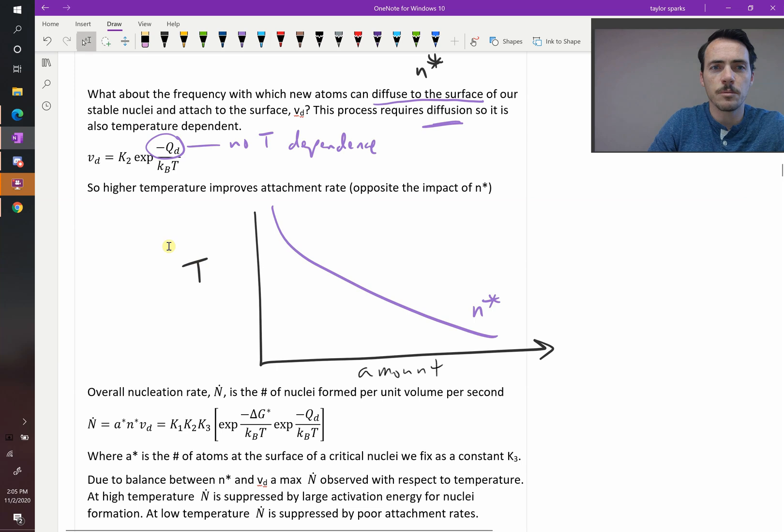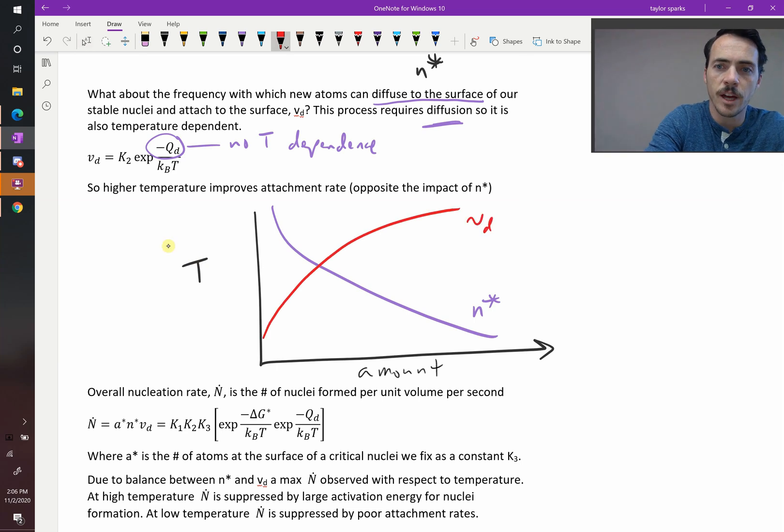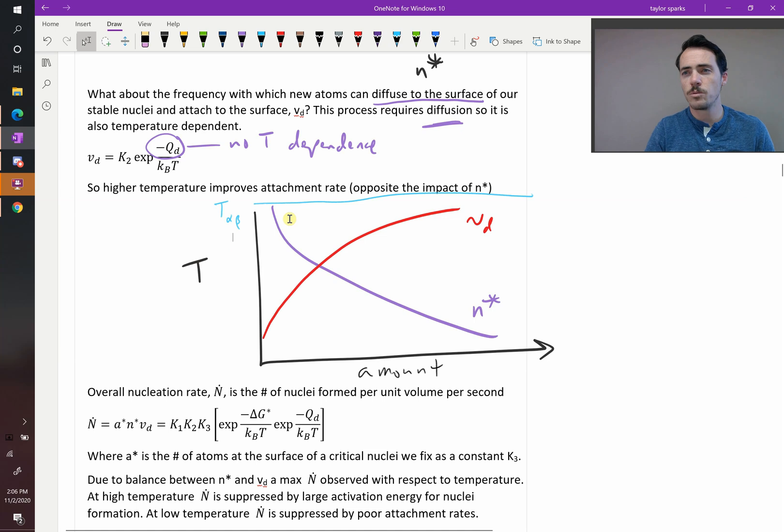But, this one, the attachment frequency is going to look like this. The attachment frequency is larger at higher temperatures because it's a typical thermally activated process. And again, this is all happening below T alpha beta, the temperature at which you'd expect the transition to occur. So, what's the takeaway here? You can't have just one or the other.